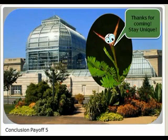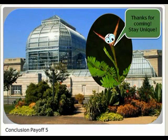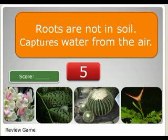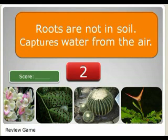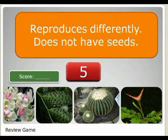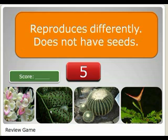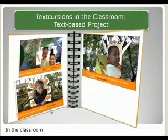Spike congratulates them once again, reminds them that plants can be unique and still thrive, and encourages students to do the exact same thing. Then students are prompted to play a quick review game among themselves, touching photographs below that connect to the sentence shown above. For example, 'reproduces differently, does not have seeds' — students would click fern, get a score, and pass the device around.